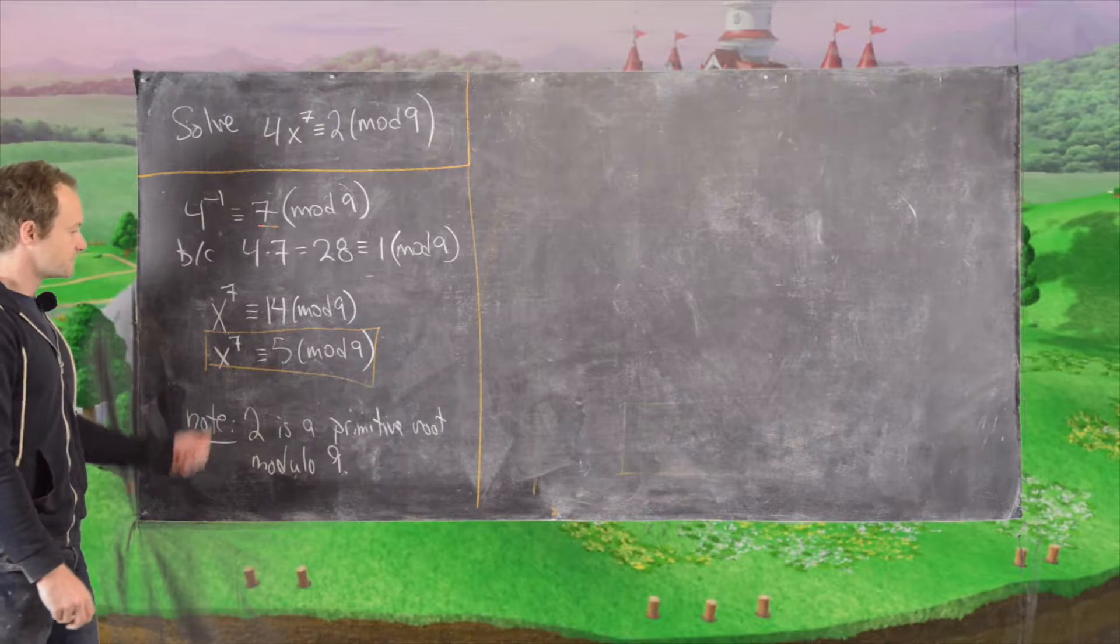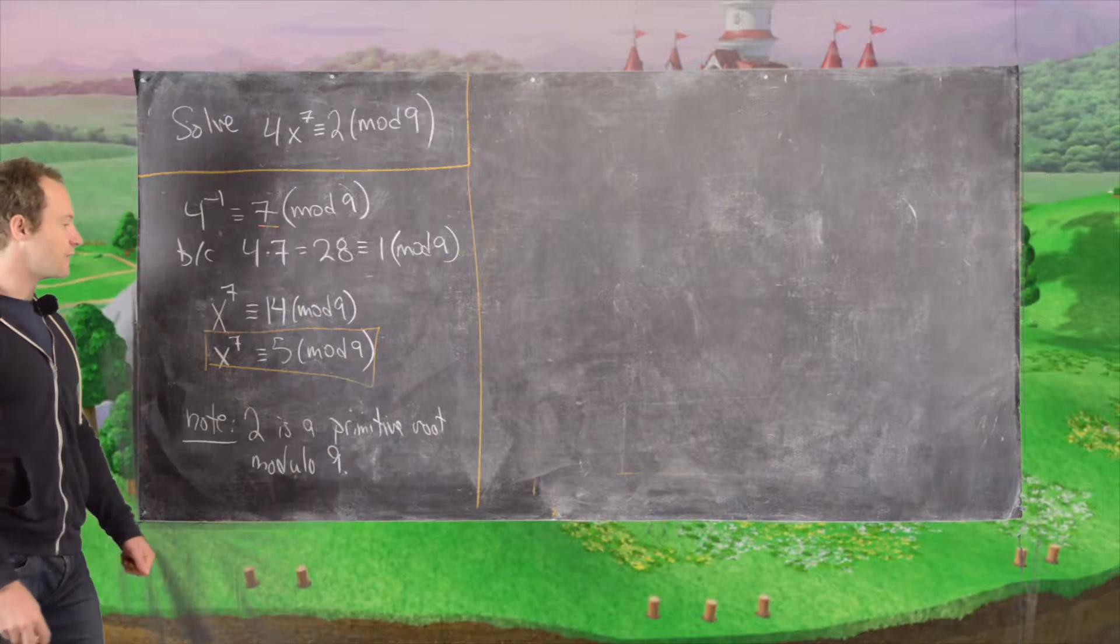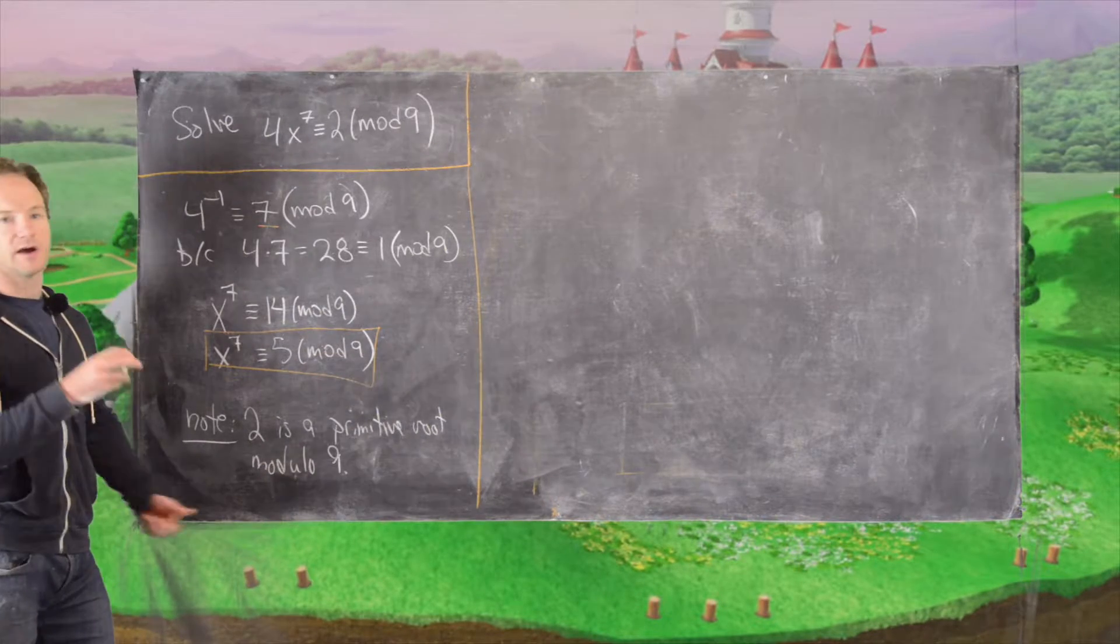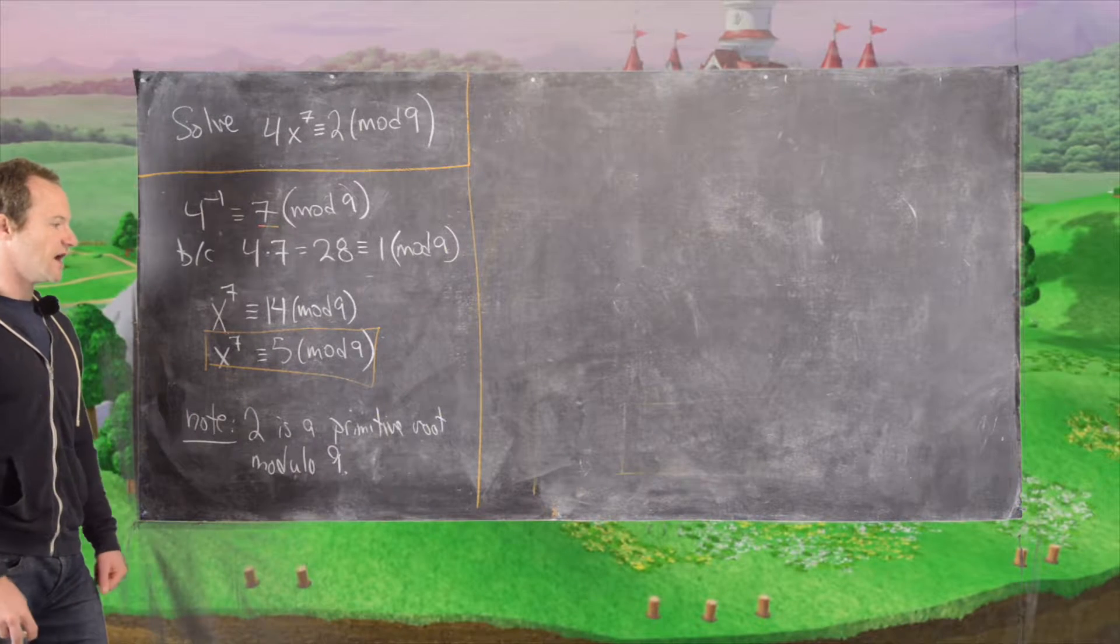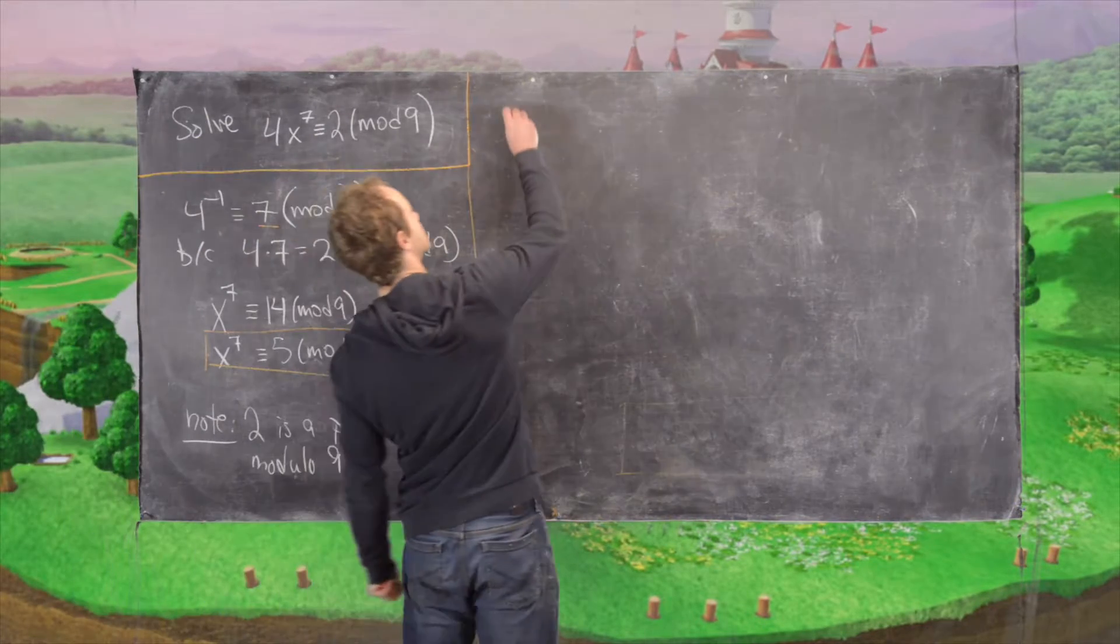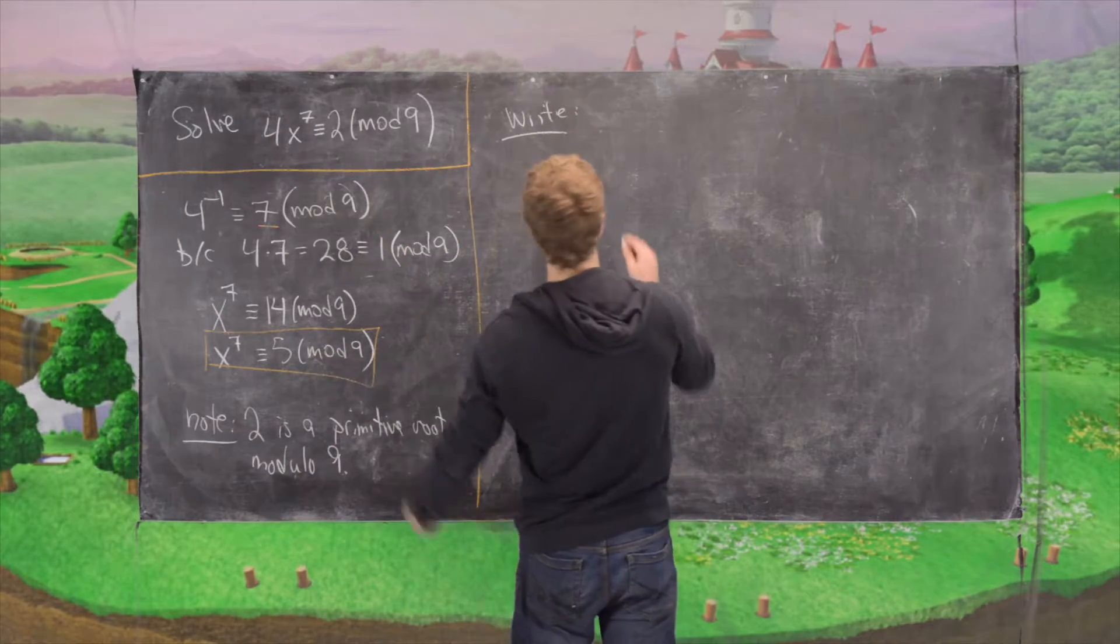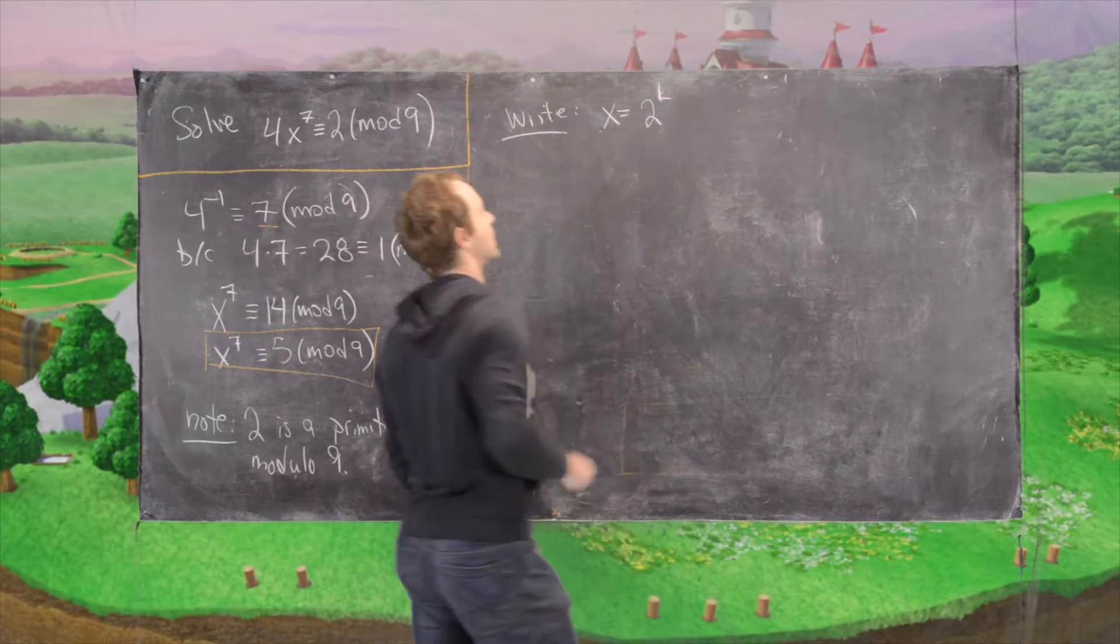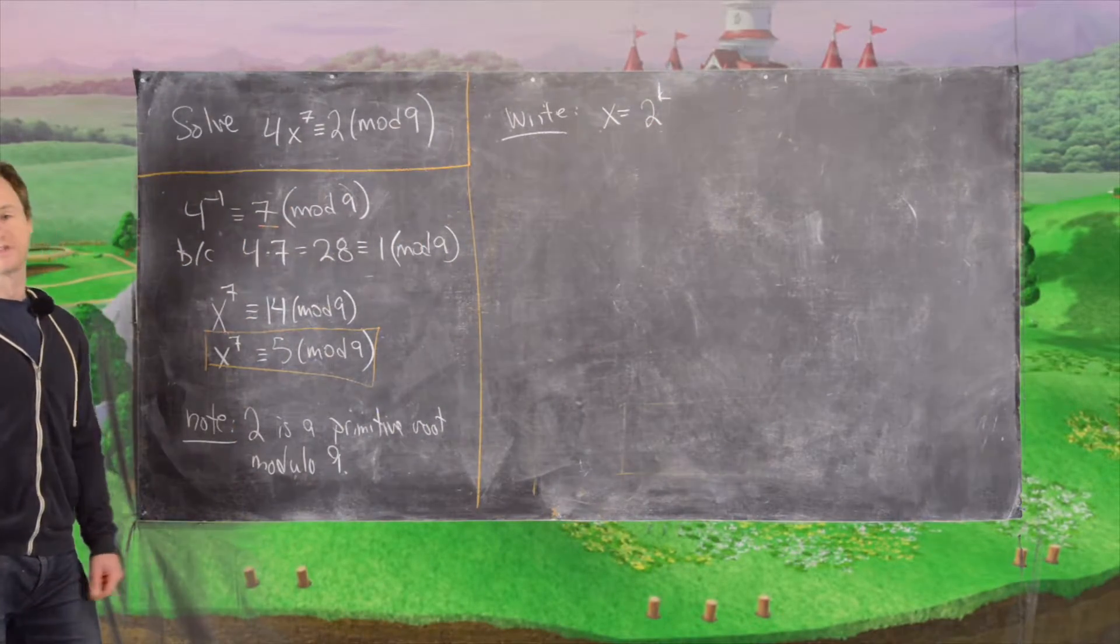So that means if we have a solution it'll likely be a power of 2. Now we don't know that for sure because 9 is a composite number, but in a more general theorem that we'll prove later we will actually be able to say that without doubt. So now what we'll do is write x as 2 to the k where k is some number between 1 and phi of 9 which is equal to 6.